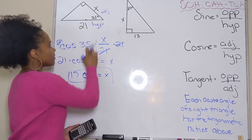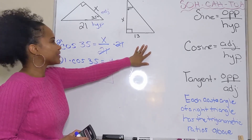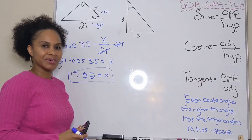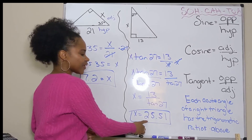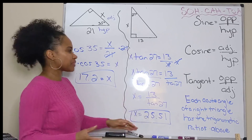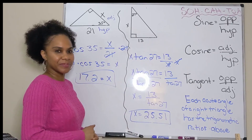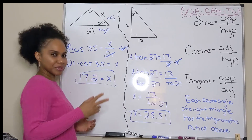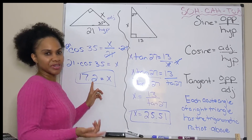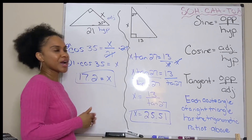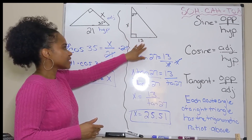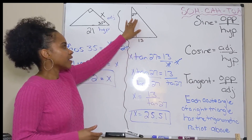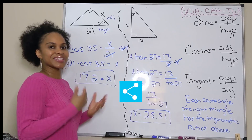Now try the last one on your own: a 27-degree angle and a side of 13 — find x. Go ahead and pause the video. You should have gotten 25.51 for your answer. Also, note that the previous problem's answer should be 17.20 — my calculator was dying and the numbers were fading. Remember: when you have a right triangle with an angle and a given side, you can always use a trig function to find the missing side. Thank you for learning with me.